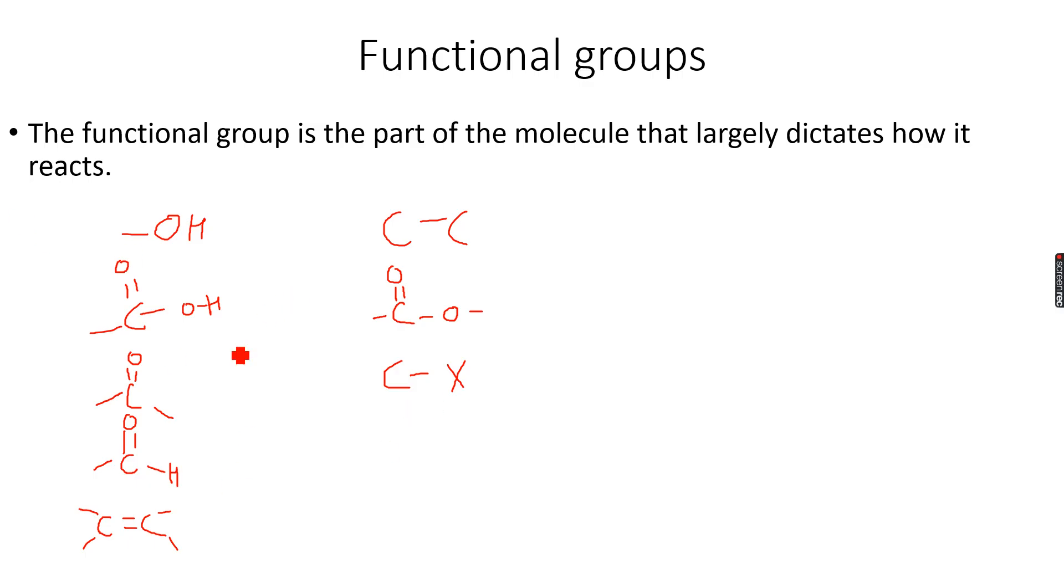You have done alcohols, carboxylic acids, haloalkanes, esters, alkenes, and alkanes in your IGCSEs. In fact, you've done most of the functional groups that we will do in the entirety of AS levels. However, ketones and aldehydes are new to you. So don't worry about that. You can find these functional groups in the carbonyl compounds playlist. These are the functional groups I've introduced to you now, so we can move forward.